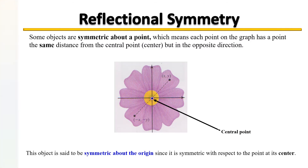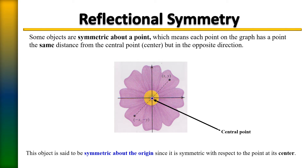We also have objects that are symmetric about a point. For example, this flower is symmetric about its center because you can fold it diagonally, on the x-axis, the y-axis — it doesn't matter how you fold it. It's still going to have symmetry because it's symmetric about the origin or the center. So we call that something that is symmetric about the origin.